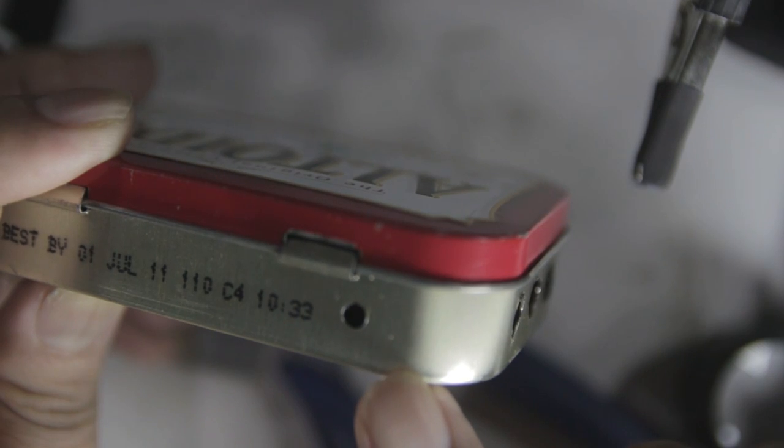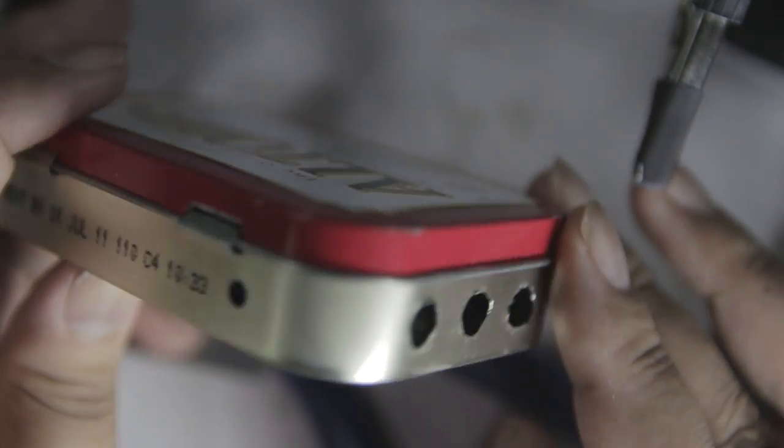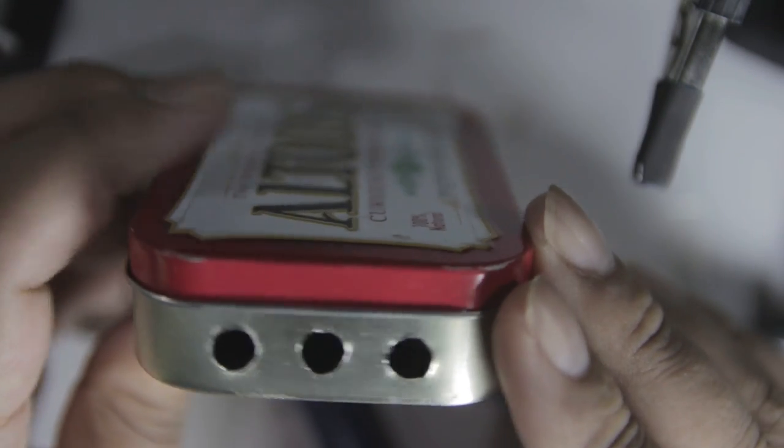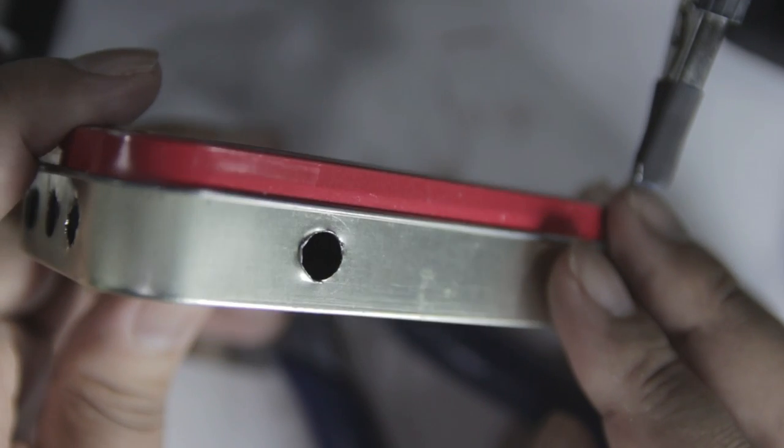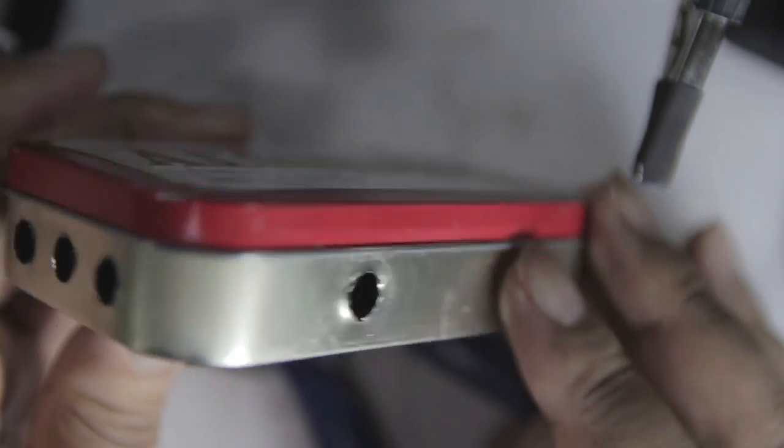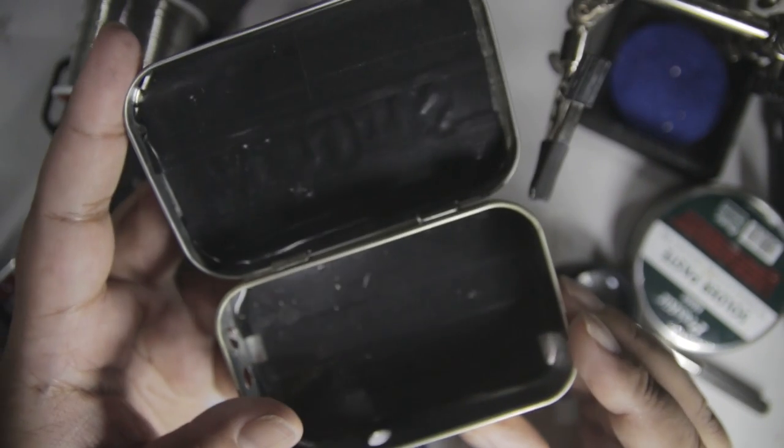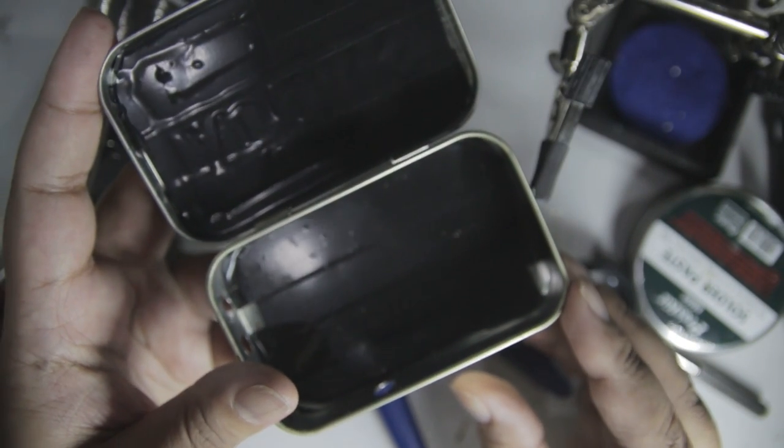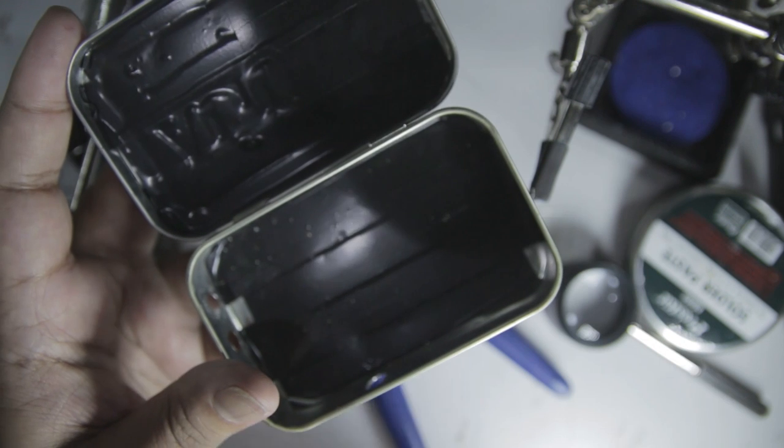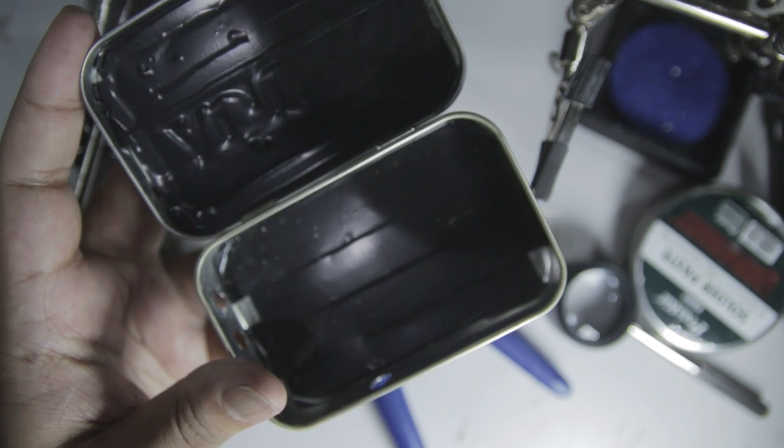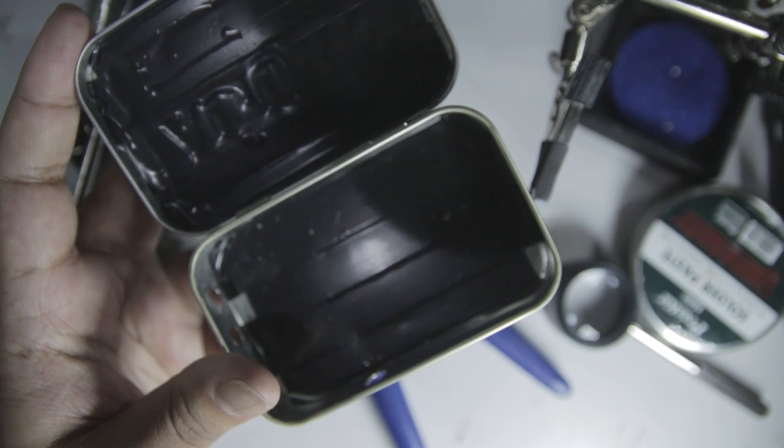I drilled holes around the Altoids box, one for the LED, one for the toggle switch, one for the input socket, one for the output socket, and one for the potentiometer. Because the box is made of metal, I have covered the inside of the box with some electrical tape. This creates insulation between the box and our circuit so there can't be any electrical shortage between them.